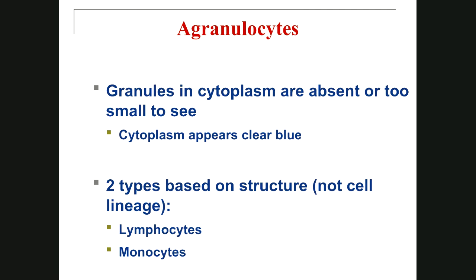The next group of white blood cells are called agranular leukocytes or agranulocytes. In this type of cell, we don't have any cytoplasmic granules — only lysosomes, which are very small and not visible under a light microscope because of their size and because they cannot get enough staining. We have two types of agranulocytes: one type is called lymphocyte and the other is called monocyte.